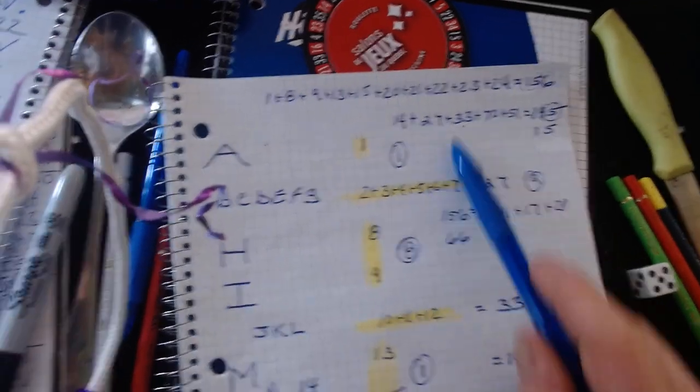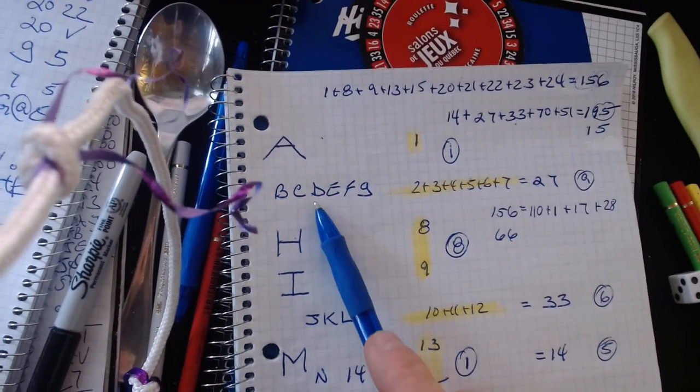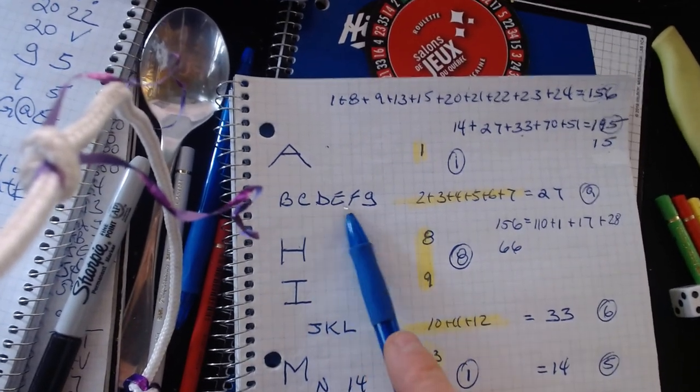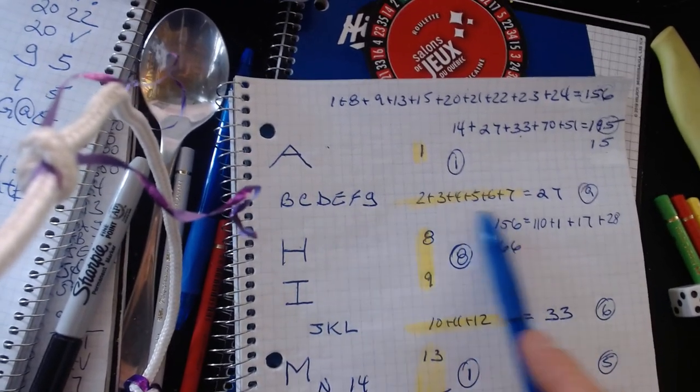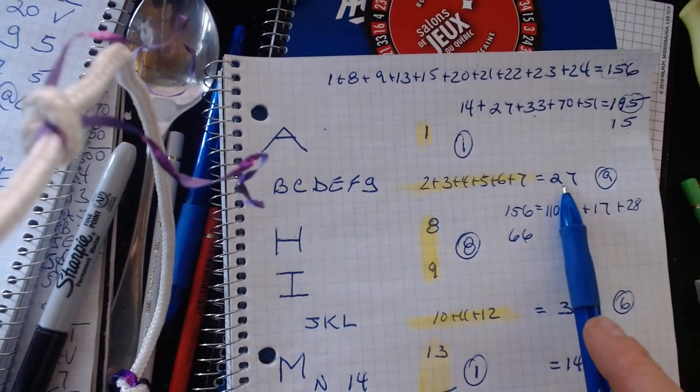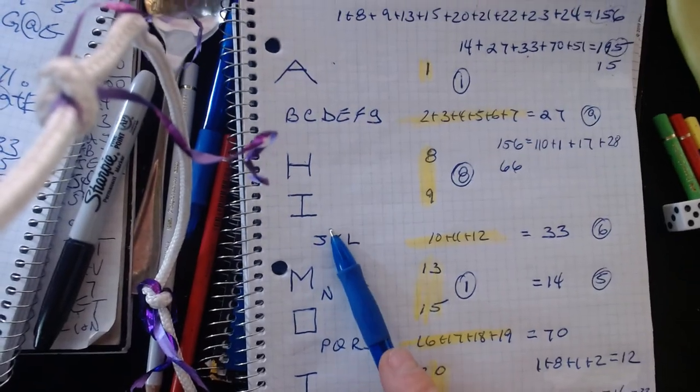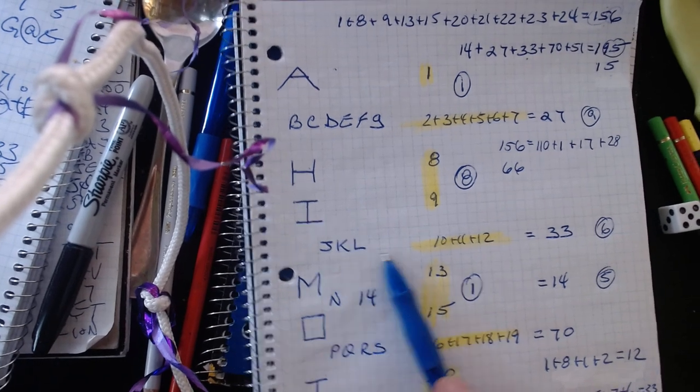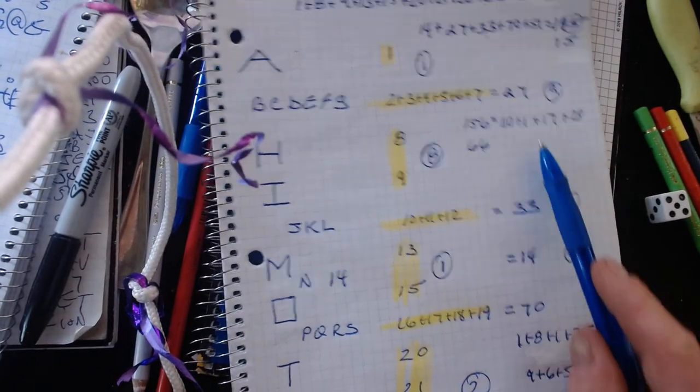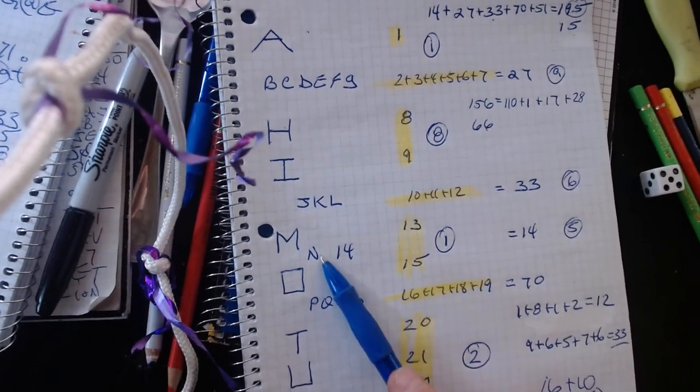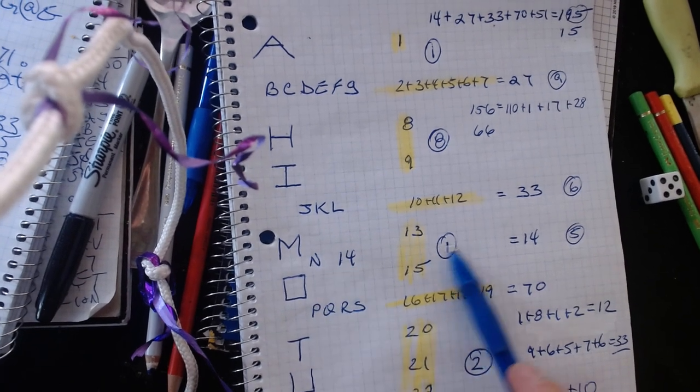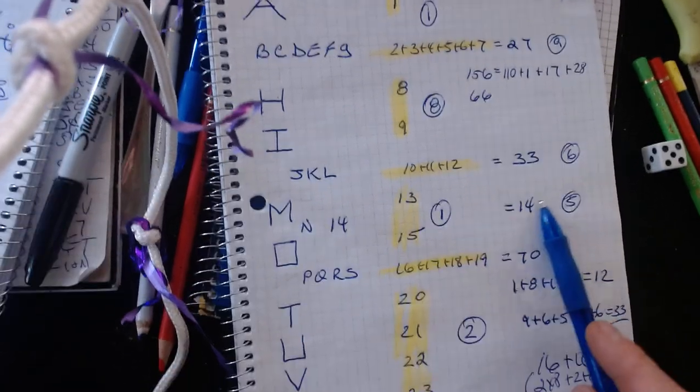When you add up the second row of numbers, which is what's in between, in between A and H is B, C, D, E, F, G. The total is 27, house of bait. When you add up what is next after HI, you get to M. It's J, K, L, 33 in rotation of the house of bait inside the sun. The M, N is where everything divides right over here at number 14.